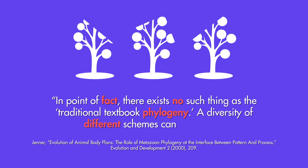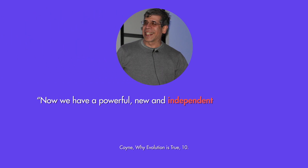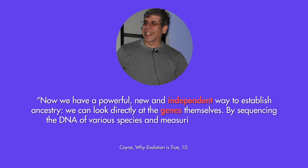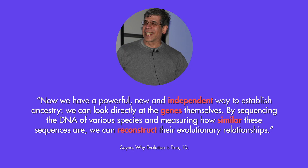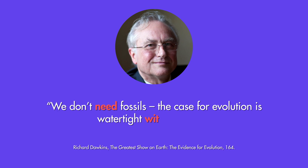Darwinists have resorted to studies of genetic or molecular homology partly because they realized the fossil record did not confirm evolutionary theory. Evolutionary biologist Jerry Coyne says: 'Now we have a powerful, new and independent way to establish ancestry — we can look directly at the genes themselves. By sequencing the DNA of various species and measuring how similar these sequences are, we can reconstruct their evolutionary relationships.' What he means by 'independent' is independent of the fossil record, which has challenged evolutionary theory due to its lack of transitional forms. Richard Dawkins takes an even more outspoken stance, bluntly stating that 'we don't need fossils — the case for evolution is watertight without them.'